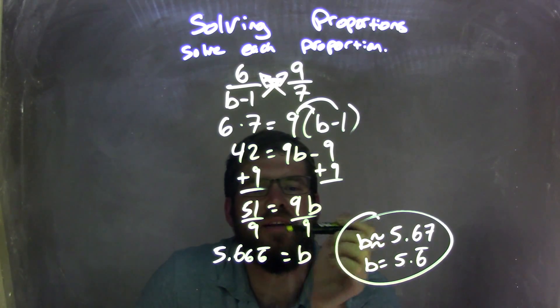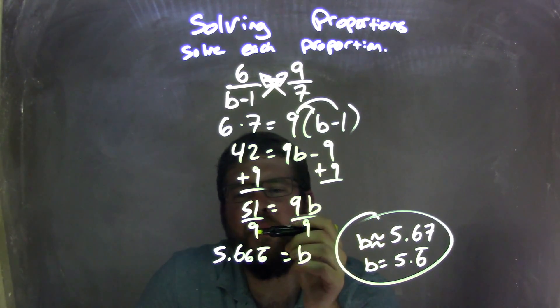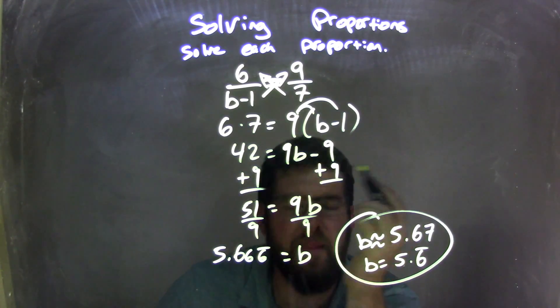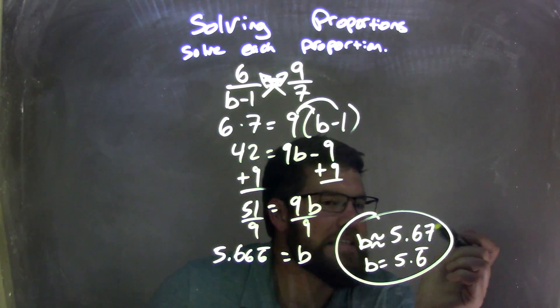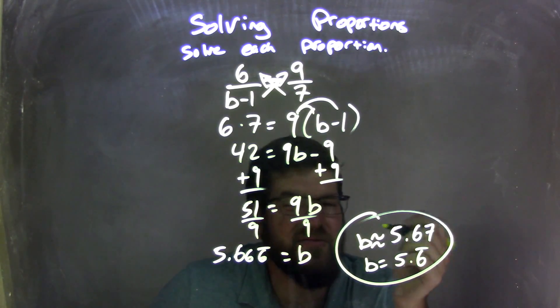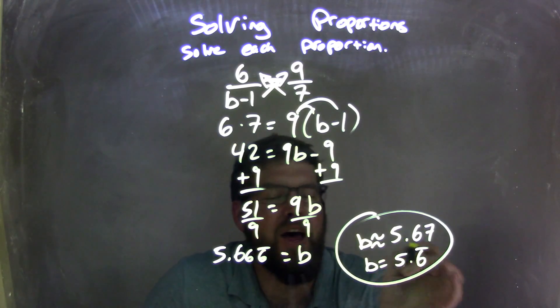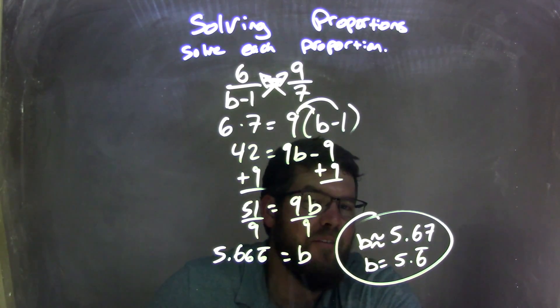I then divided by 9 to both sides, giving me b by himself. And 51 divided by 9, using my calculator, came up with b 5.6 repeating. You can round that to be 5.67, or you can really keep it in the true form as 5.6 repeating. But either way, those two are final answers.